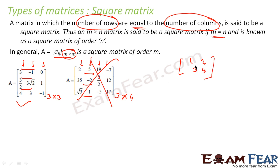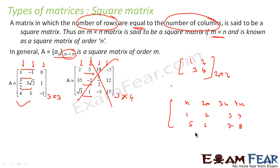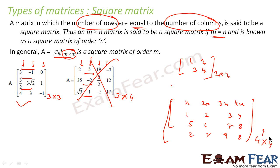This 2 by 2 matrix is a square matrix of order 2. Another example is a 4 by 4 matrix — 4 horizontal rows and 4 vertical columns. Here the row number and the column number are equal, so this is also an example of a square matrix.